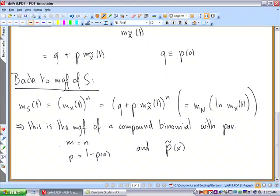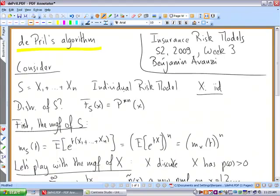What we'll do is that since we have something of the form compound binomial, we can use Panjer's recursion even though we are in the individual risk model.